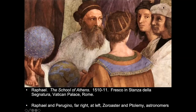Raphael places himself all the way over on the physical side with his teacher Perugino. He's also with Zoroaster and Ptolemy — both astronomers — just describing the world rather than interpreting it. So he puts himself among people who simply describe what they see. Again, a certain amount of humility: he's not saying he's making a great artistic statement, just showing what he sees.